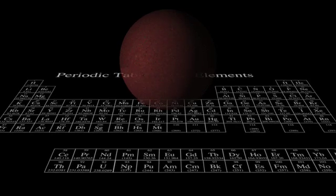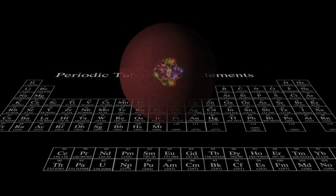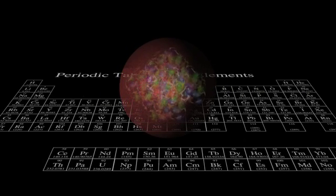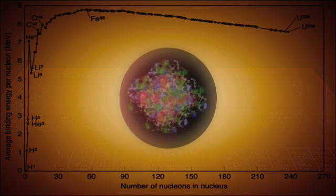So as we add nucleons and work our way up the chart of the periodic table, initially each nucleus is generally a little more tightly bound than the one before. This chart gives the actual numbers.